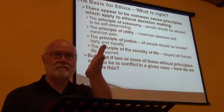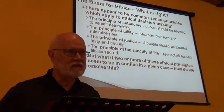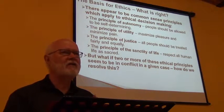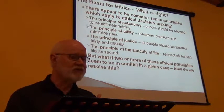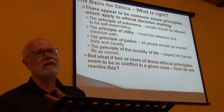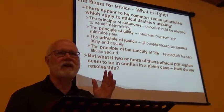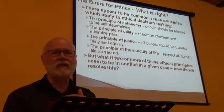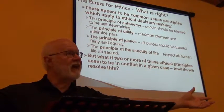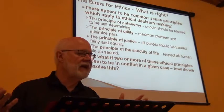Two of those principles are seen as being in conflict in a very important cultural question: abortion — and also the death penalty. With abortion, the principle of autonomy — 'I have a right to do with my body whatever I want' — is in conflict with the principle of sanctity of life: 'You're threatening to take a human life, whether born yet or not.' The argument about where life begins — at conception, at birth, or at the point of viability — had to do with this conflict between autonomy and sanctity of life.